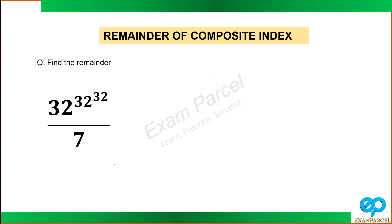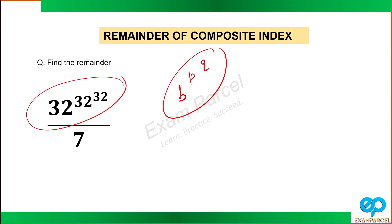Now let's move on to composite index. What is composite index? Composite index is when you have a base b raised to power p, and then raise that entire expression to another power p — that is, a power of a power. For example: 32 raised power 32 raised power 32. That generally means composite index. So how do we solve this?